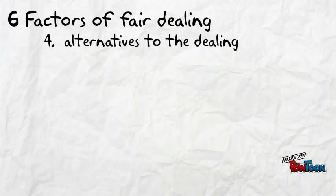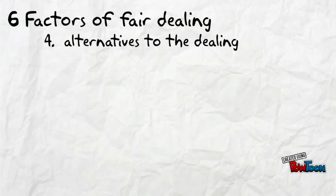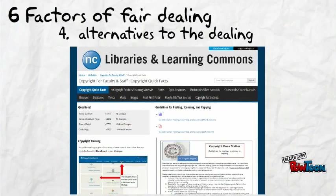Number four: alternatives to the dealing. Can you use something in the public domain or Creative Commons? If you are in doubt whether your copying will be considered fair dealing, do not copy the work. Consult your library staff and visit the library's subject guide, Copyright for Students, for alternative sources.